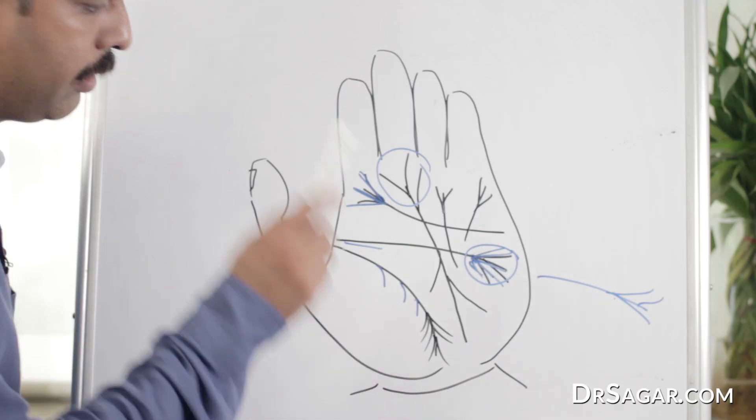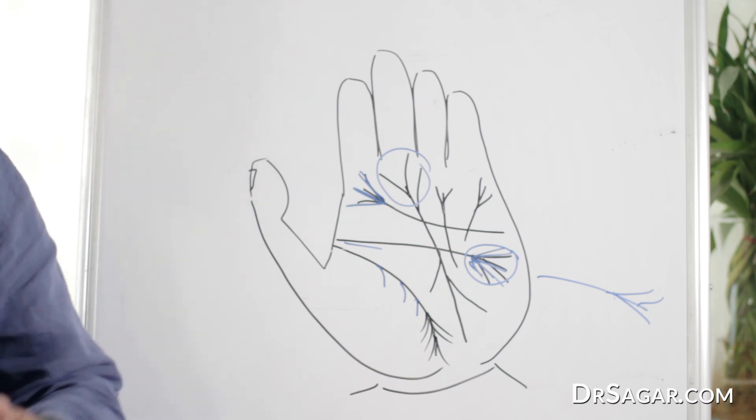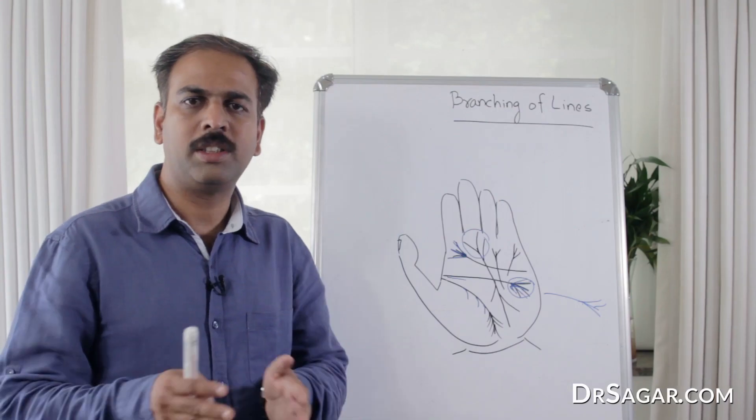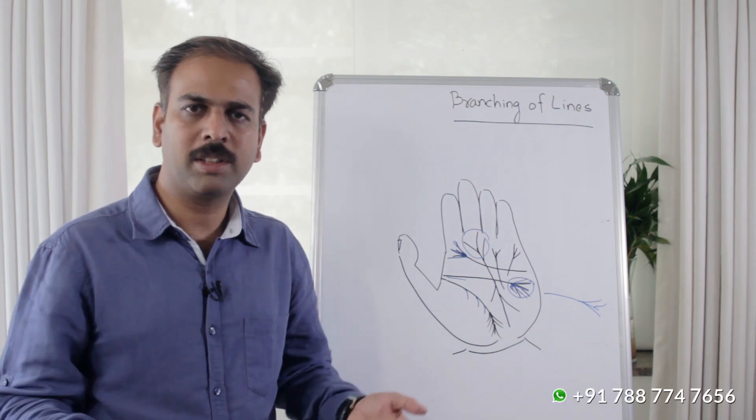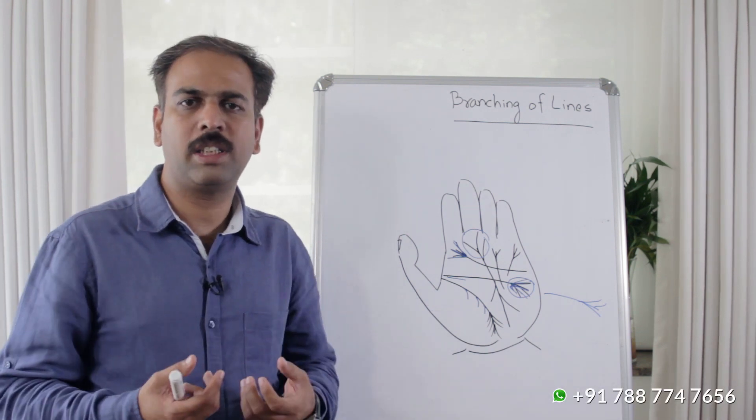This is the life line. If the life line has breaks or chains, then what is the meaning? The life line represents vitality and energy.